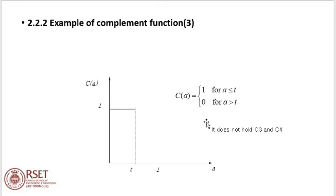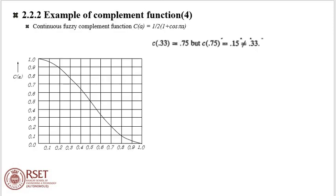This complement function does not satisfy axioms C3 and C4. Another example: C(A) = (1/2)(1 + cos(pi A)). Here, C(0.33) is 0.75 and C(0.75) is 0.15, which is approximately 0.33.